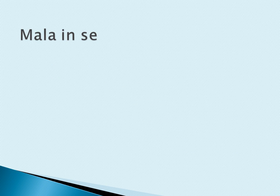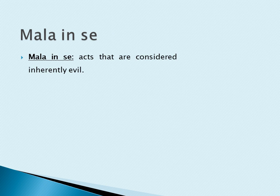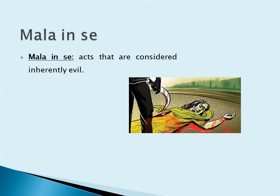Next is mala in se. These are acts that are considered inherently and essentially evil — that is, immoral in their nature and injurious in their consequence — without any regard to the fact of their being noticed or punished by the law of the state. Some acts such as murder are against the law in most countries as well as in all jurisdictions.